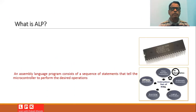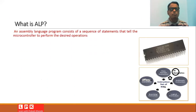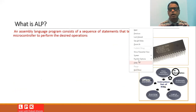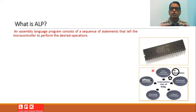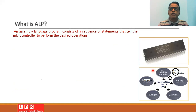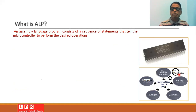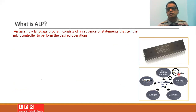Let us start with the question: what do we mean by an assembly language program? We know that 8051 is a microcontroller unit and it has many instructions. These instructions can be classified into different categories such as data transfer, arithmetic, logical, branching, subroutine, and bit manipulation instructions. By using these instructions we can write assembly language programs.